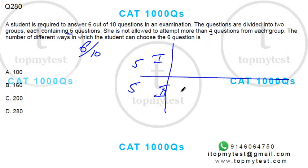So you cannot choose more than 4. Let's see. You can have 4 and 2. You can have 3 and 3. Or you can have 2 and 4. These are the 3 possible cases.